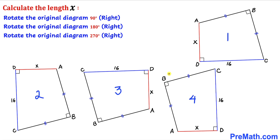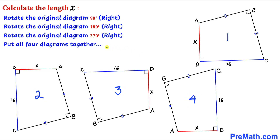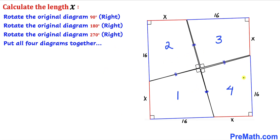In this next step I have labeled these diagrams: this is our original diagram number one, this is number two, number three, and finally this is number four. Here's our next step — let's go ahead and put all these diagrams together, as you can see in this next diagram. This is diagram one, diagram two, diagram three, and diagram four.